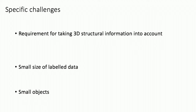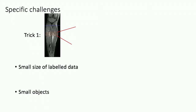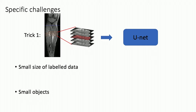We plan to feed the reference segmentation for both artery and veins to the network and let the network learn the judgment. To solve the first problem, we came up with an idea of taking each five adjacent slices as a stack to input into the network, so that we have the information in the longitudinal direction.